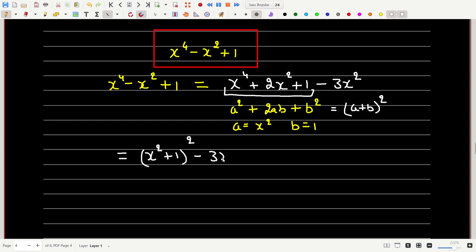Now 3x square can be written as under root of 3x this whole thing squared. So I can write this thing as x square plus 1 whole square minus root 3x squared.